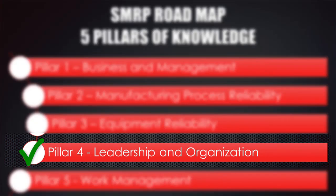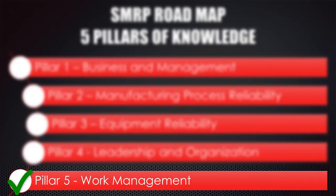Pillar 4 talks about Leadership and Organization. This subject area describes processes for assuring that the maintenance and reliability staff is the most qualified and best assigned to achieve the maintenance and reliability goals. Pillar 5 talks about Work Management. This subject area focuses on the skills used to get the maintenance and reliability work done. It includes scheduling and planning activities, quality assurance of maintenance activities, and inventory management.